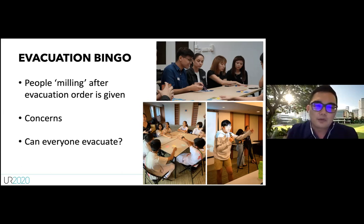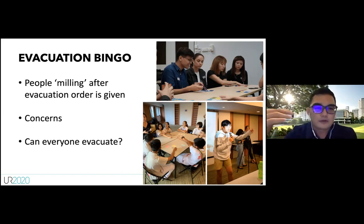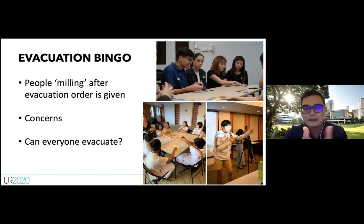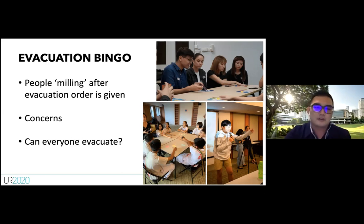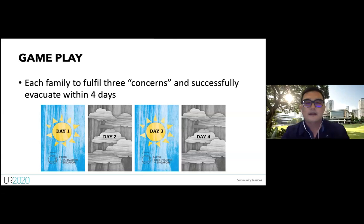The period before people actually evacuate — when they want to resolve concerns first — is called the 'milling period.' This game is built around that idea. Players are divided into family pairs, and each family receives three concerns drawn from eight different concern types.